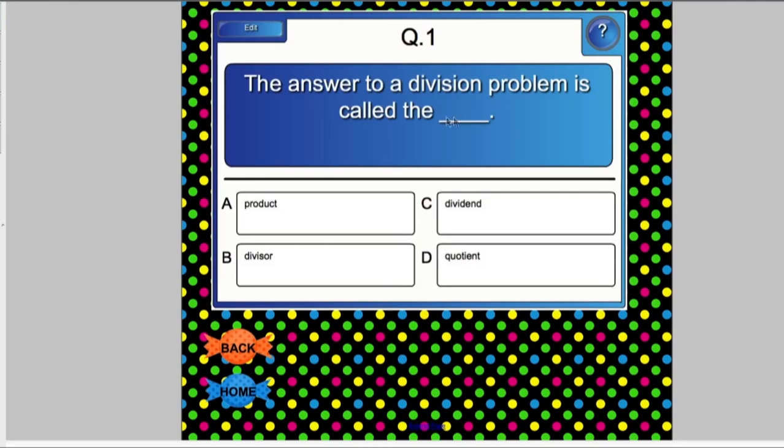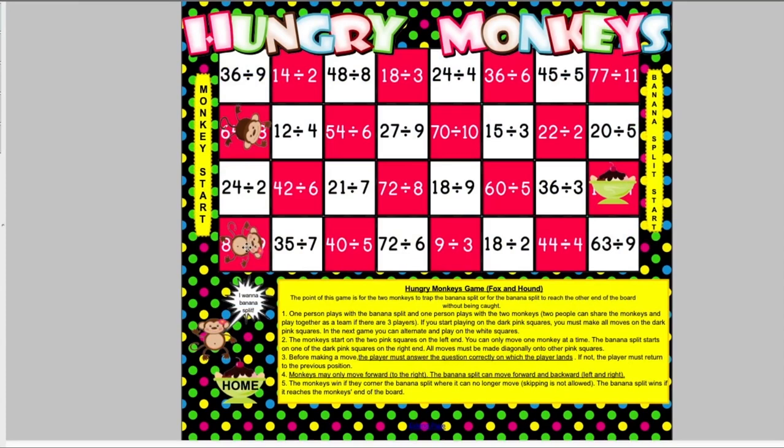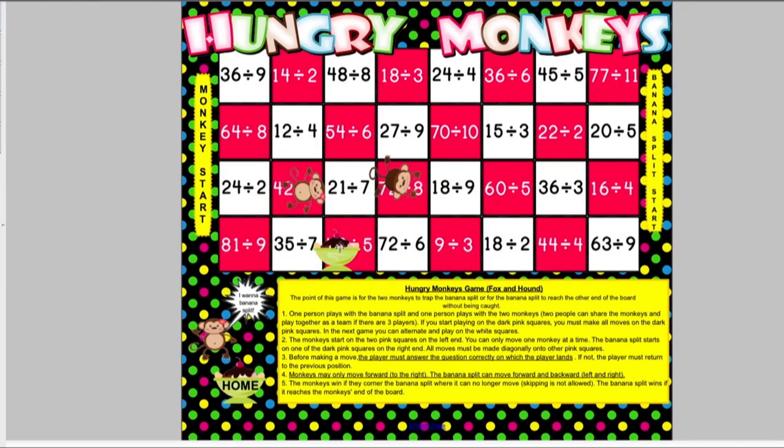The last game is hungry monkeys, which is kind of like checkers, but it's actually the fox and hound game. Two monkeys are one team, and the ice cream sundae is another team. The two monkeys can only move diagonally to the right, solving the division problems, but the sundae can move left and right. In order for the monkeys to win, they must trap the sundae where it can no longer make a move.